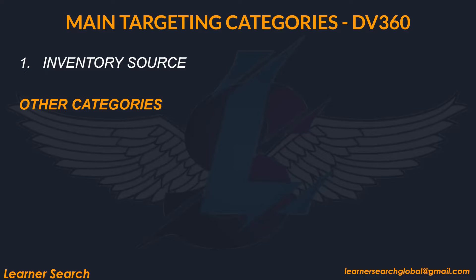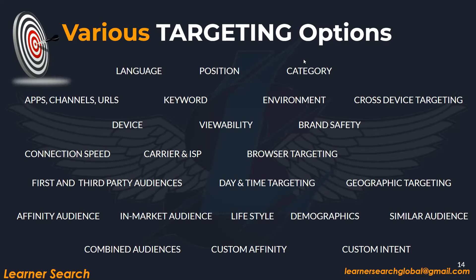There are other main categories available in DV360. We shall look into various targeting options in the platform, like language, position, keyword, device, viewability, brand safety, browser targeting, and many more. Not only DV360, in any DSPs, most of these options are available. In this platform, we can categorize all these options into three types.